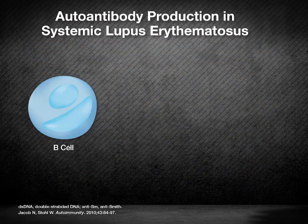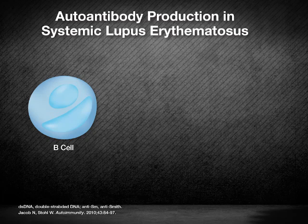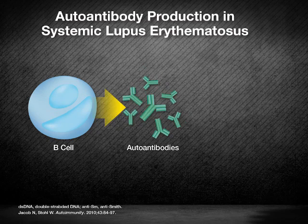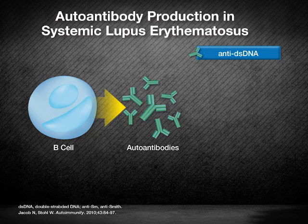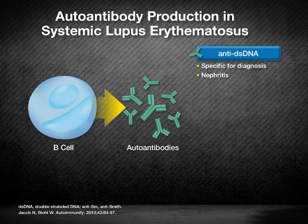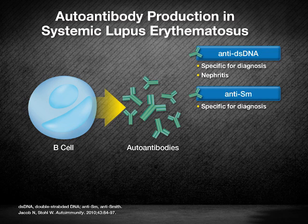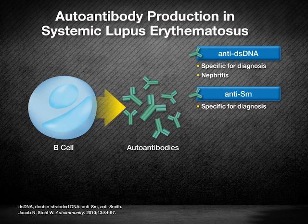One of the hallmarks of lupus is a generation of autoantibodies. Certain autoantibodies, such as antibodies to double-stranded DNA or SM, are highly specific to lupus and are thus diagnostically valuable.